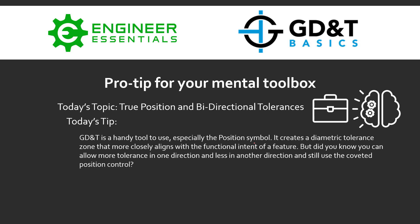Hey everybody, Jason here again with GD&T Basics. Today's pro tip for your mental toolbox is true position and bi-directional tolerances. GD&T is a handy tool, especially when using the position symbol. Essentially, it creates a diametric tolerance zone that more closely aligns with the functional intent of a feature.